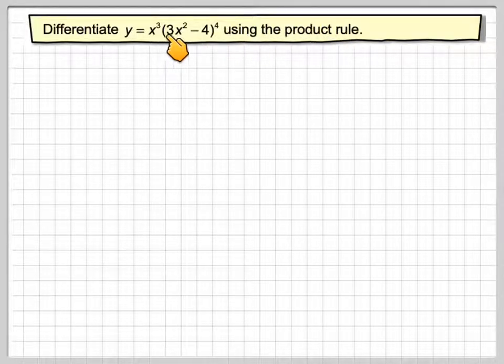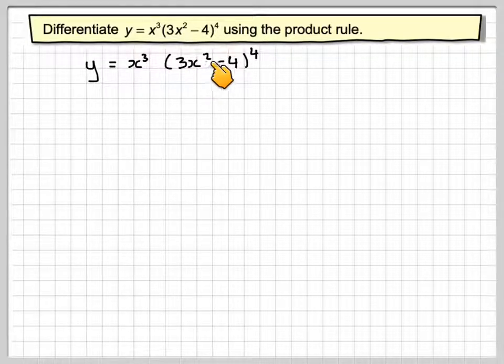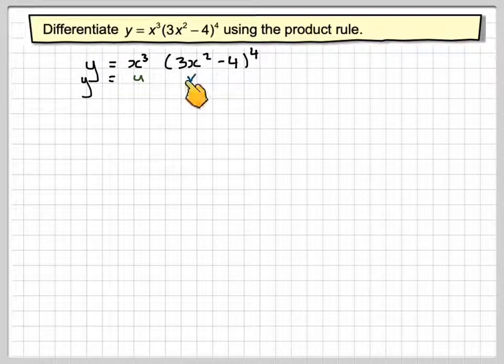Now you're not going to really want to expand this, you're going to want to use a different rule. And so if y equals x cubed times 3x squared minus 4 to the power of 4, that's of the type y equals uv.